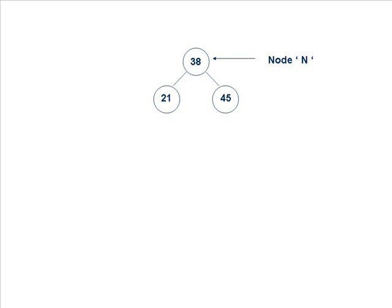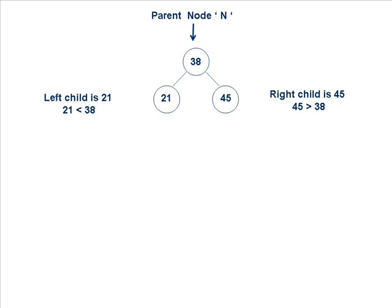To understand this, consider a small tree having one root and one child node on the left side and one child node on the right hand side. It has three values: 38 is placed at the root node, 21 on the left hand side, and 45 on the right. Because 21 is less than 38, it is placed as the left child node, and because 45 is greater than 38, it is placed on the right — therefore it is a binary search tree.